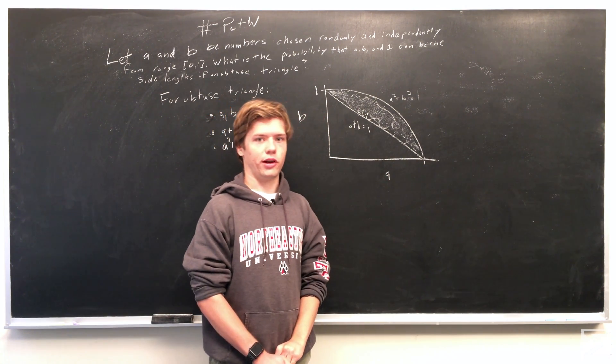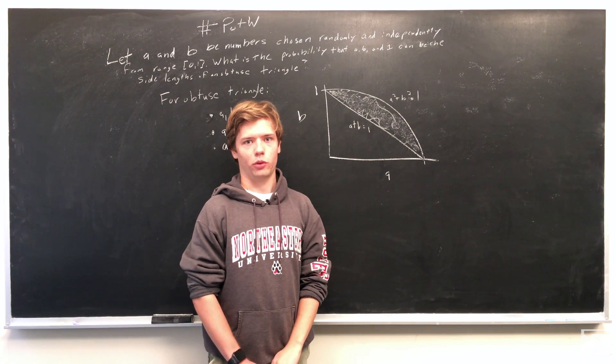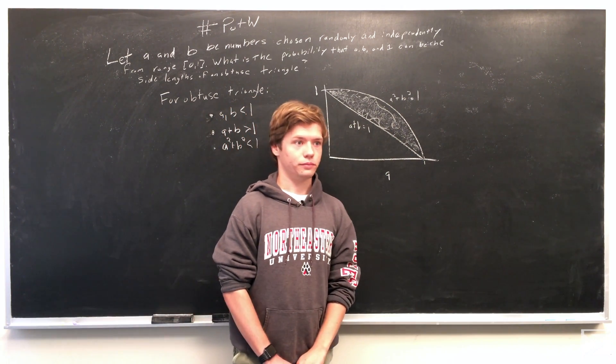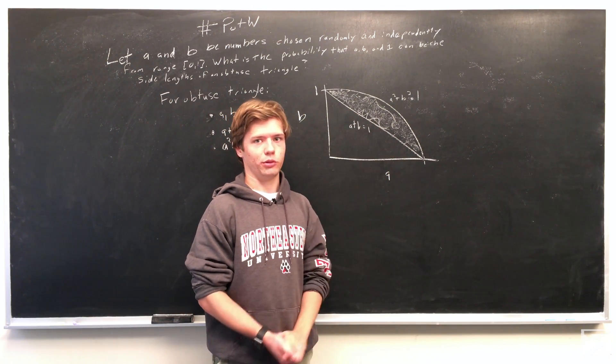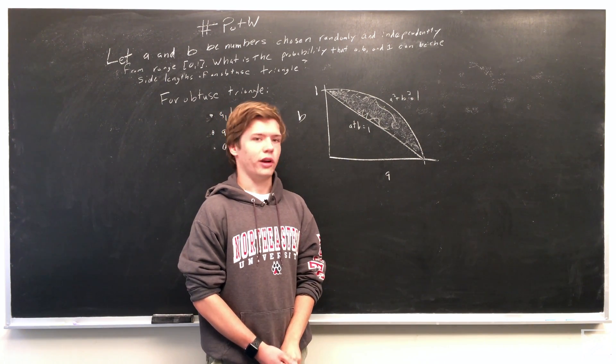What we need to do is just figure out what this area is, and the probability of choosing a point in this area will equal the probability that A, B, and 1 can form the length of an obtuse triangle.